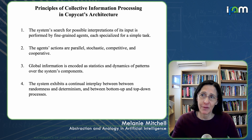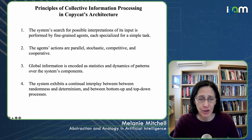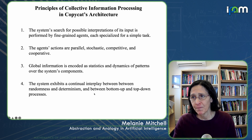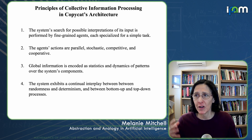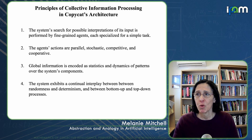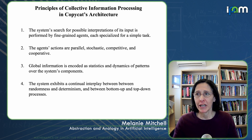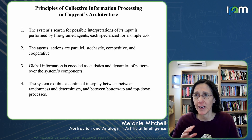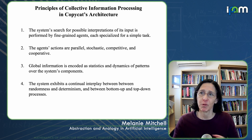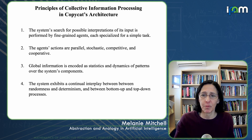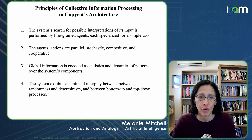The result is that the system has a continual interplay between randomness and determinism — as we saw in ant behavior in the previous talk — and between what you might consider bottom-up, very exploratory processing, and more top-down exploiting of what's already been discovered. This is a sort of exploration-exploitation trade-off, and we see this continual interplay between those kinds of forces.